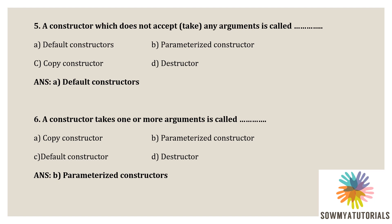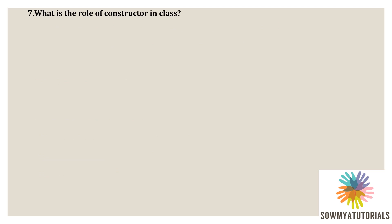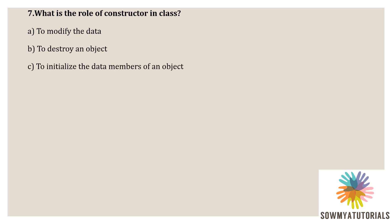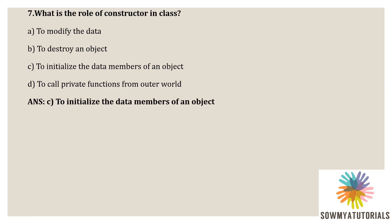Next question: what is the role of a constructor in a class? Options: A) to modify the data, B) to destroy an object, C) to initialize the data members of an object, D) to call private functions from outside. A constructor is a special member function used to initialize the objects of a class automatically. The correct answer is option C, to initialize the data members of an object.